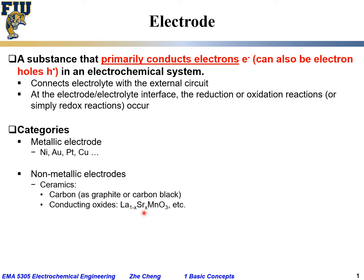Non-metallic electrodes can also be conducting oxides, such as this one — I would call it strontium-doped lanthanum manganate. It is a ceramic material that can conduct electrons, or specifically for this material, electron holes. These ceramics can also be electrodes, but they are non-metallic electrodes. Electrodes can also be polymers, specifically conducting polymers, like the common ones including PEDOT and PANI. All these can be electrode materials — from metals, to non-metallic ceramics, as well as polymers.